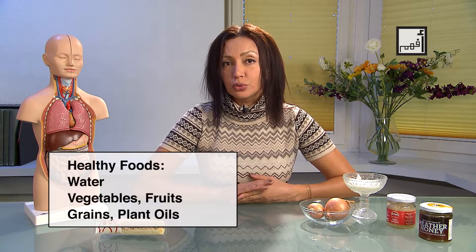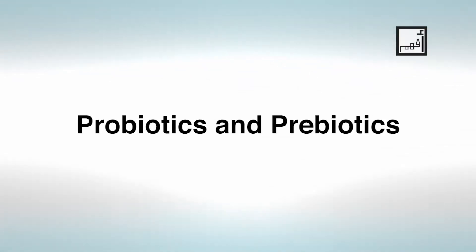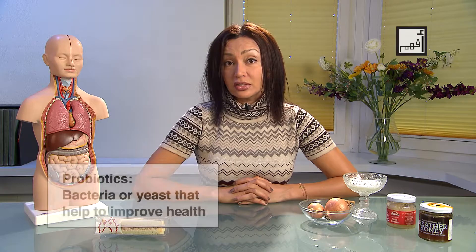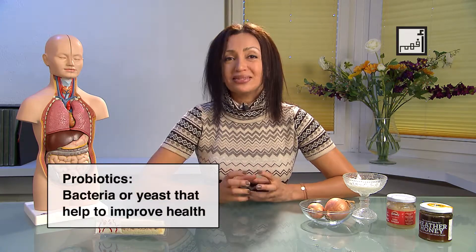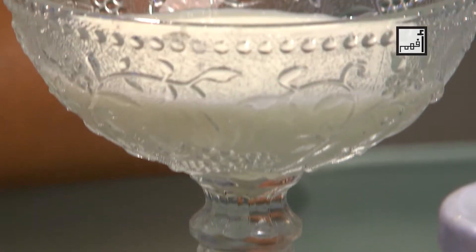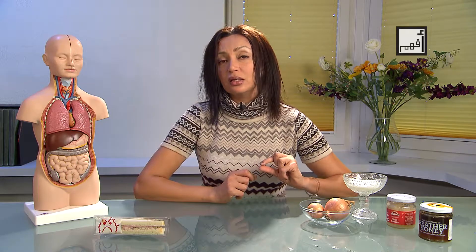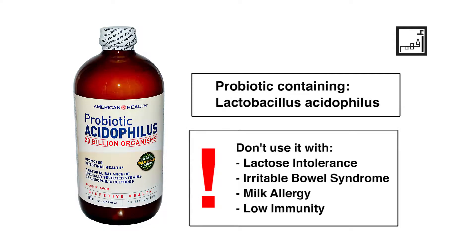Instead, eat vegetables, fruits, grains, and healthy fats such as vegetable oils. You can also use probiotics — fermented foods that help the growth of good bacteria in the gut. Probiotics include mainly yogurt, which is very good, and kefir. If you have problems with kefir or yeast, start with very small amounts like one spoon a day and gradually increase. When buying probiotics, look for the name lactobacillus on the label — that's the good bacteria for you.